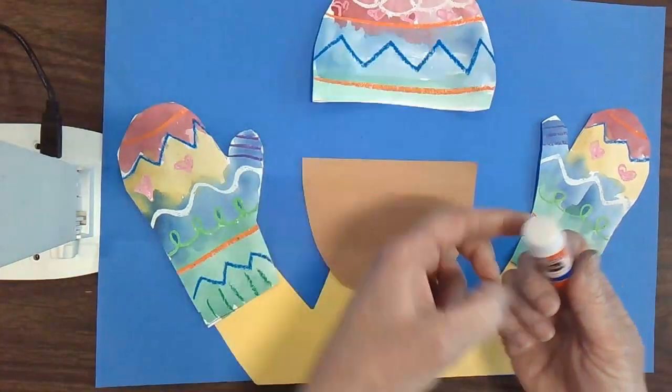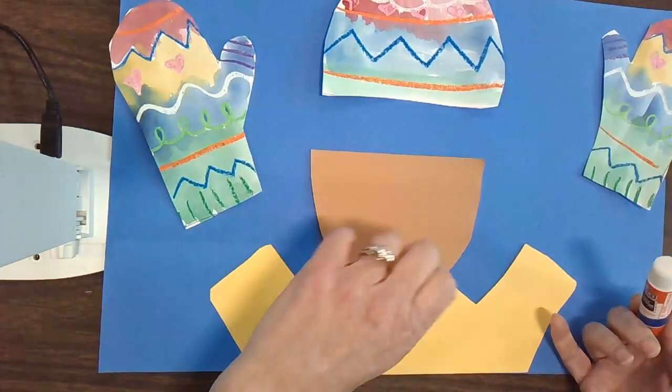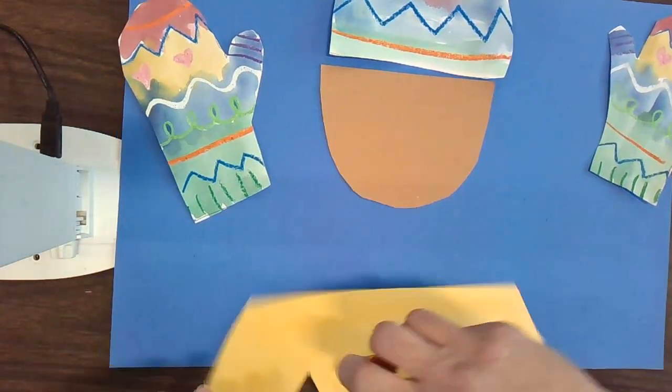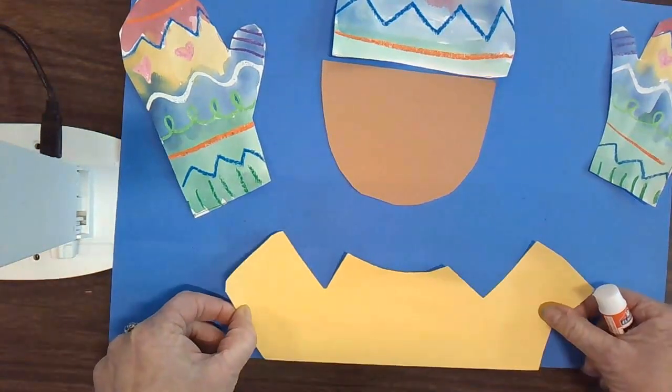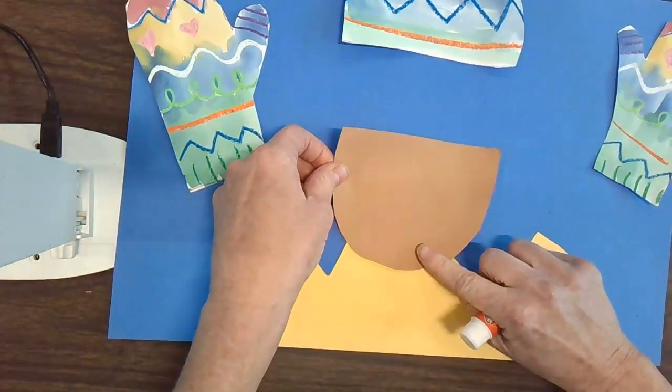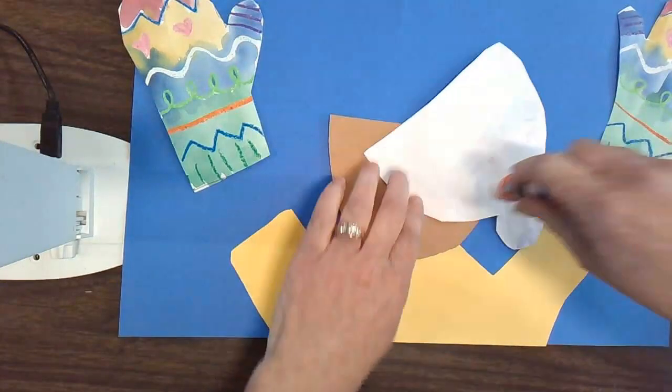You're going to be using a glue stick for this, and you want to start with the jacket and put some glue stick on the back. You can make sure that that straight edge at the bottom lines up with the straight edge of your paper, and you're going to add the face smiling at you.